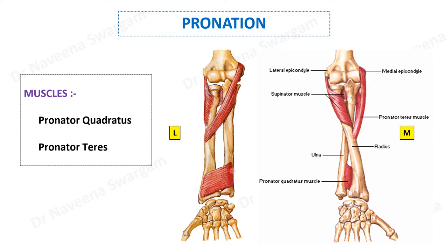Pronator quadratus arises from the lower part of the anterior surface of the shaft of the ulna and gets inserted onto the lower part of the anterior surface of the shaft of the radius. When it contracts, it rotates the lower end of the radius around the lower end of the ulna.